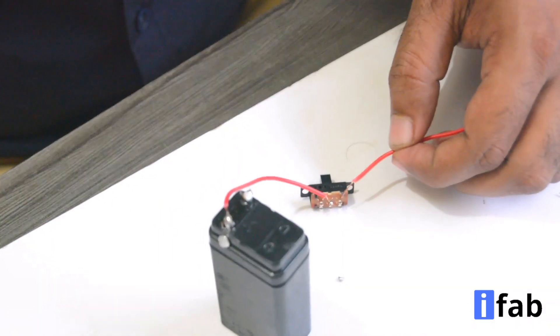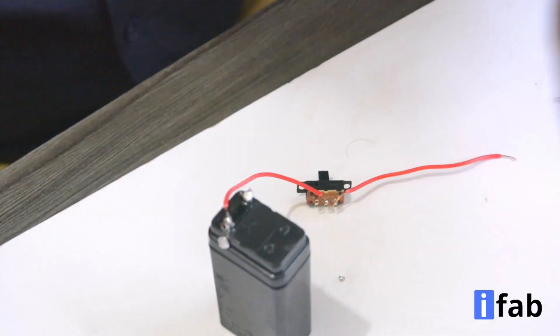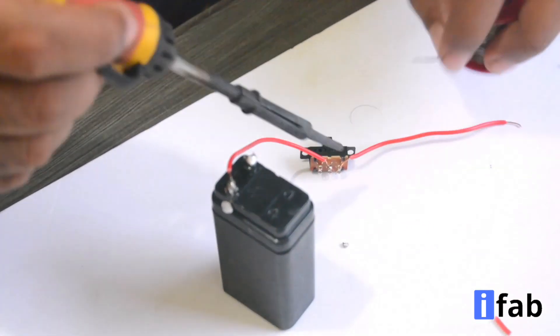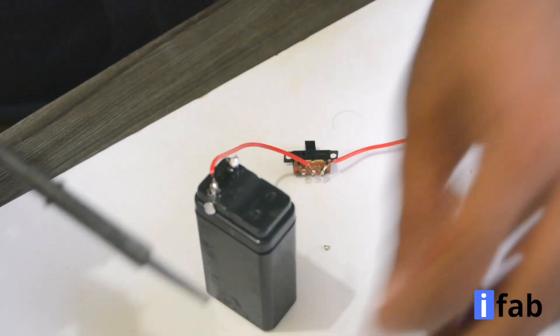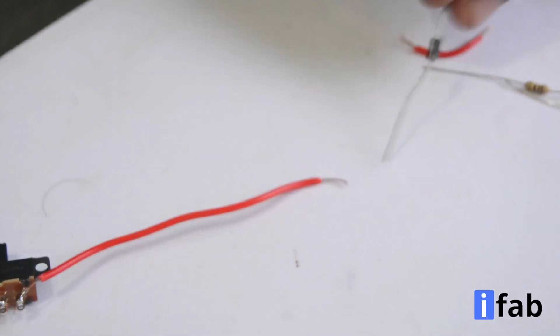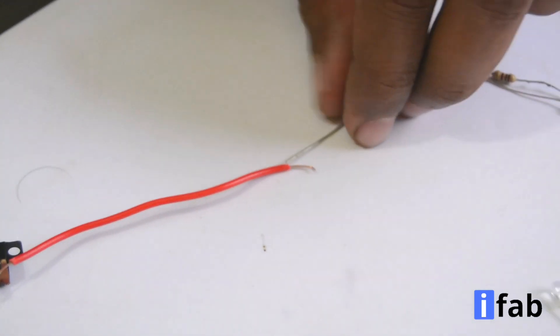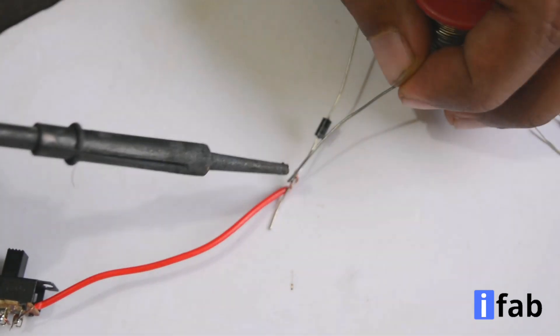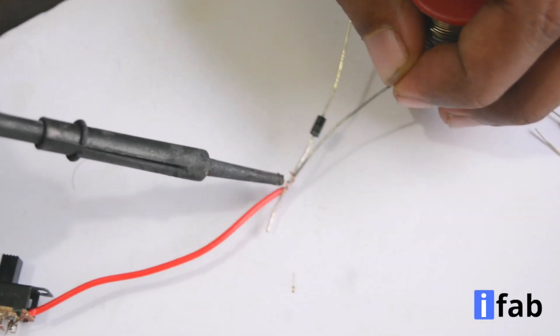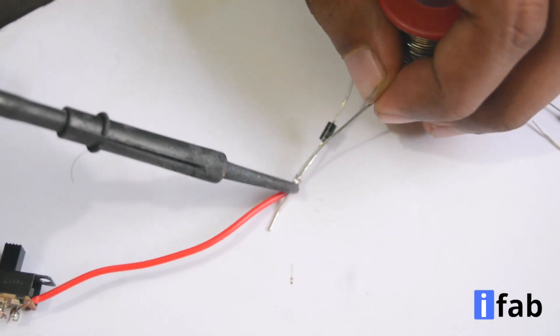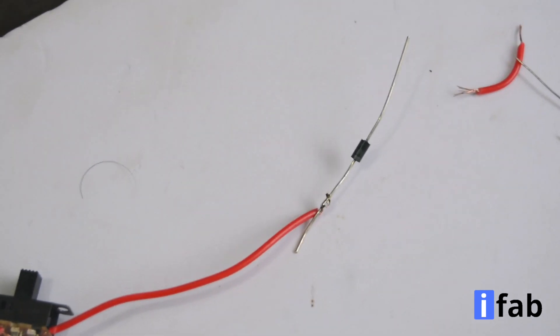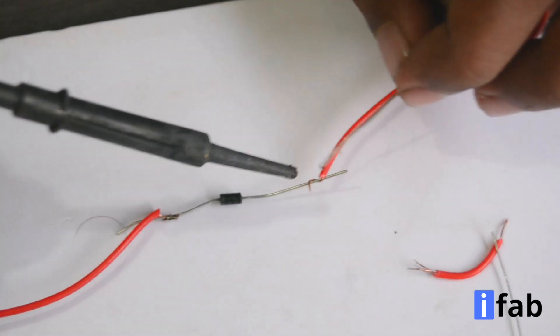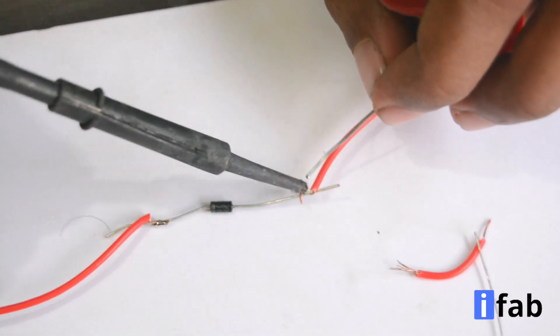Now connect one end of the switch to the cathode of the diode. In order to do this you can use a multi-strand wire piece. This is the 1N4007 diode, you can solder it carefully. Connect the anode to the positive wire of the USB port.